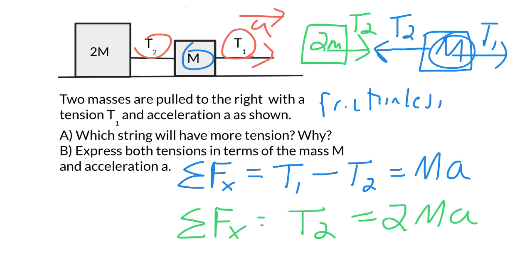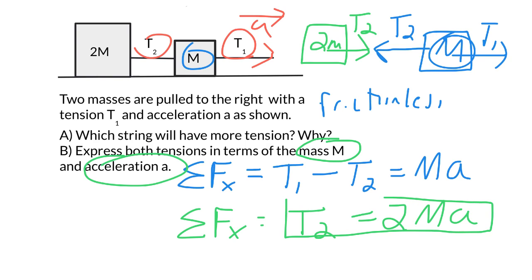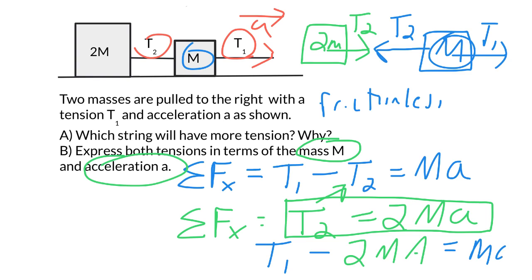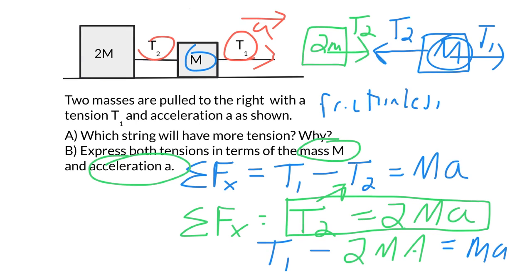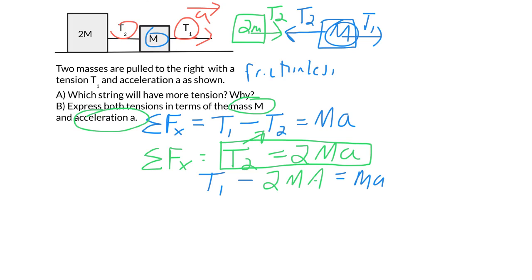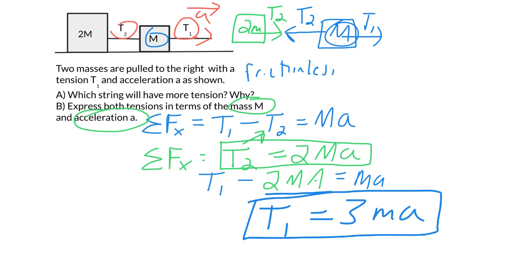The problem is asking us to express tensions in terms of mass and acceleration, and at this point T2 is done: T2 equals 2MA. The only thing we need to do now is solve for T1. We substitute T2 into the first equation: T1 minus 2MA equals MA. Adding 2MA to both sides gives us T1 equals 3MA. So T1 clearly has more tension — 3MA versus T2 which was only 2MA.